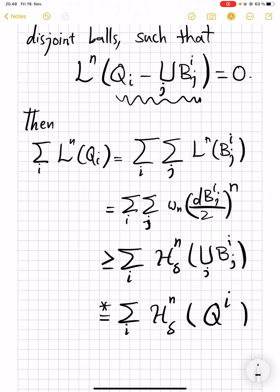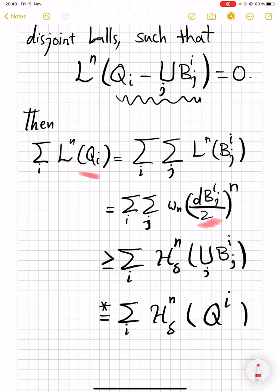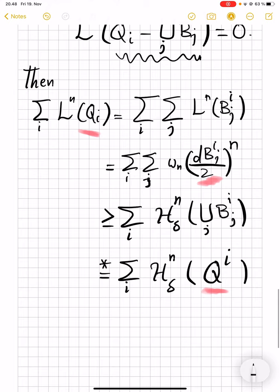Sorry. Union over j covers Q_i. So, I know I might be over explaining, but here you have Q's. Then you go to the balls. You miss part of your set, but that part has L^n measure. So you can add it back here to go back to the Q's.